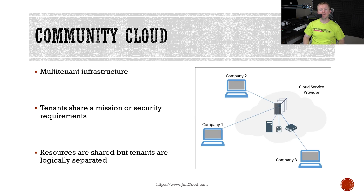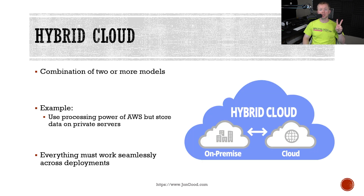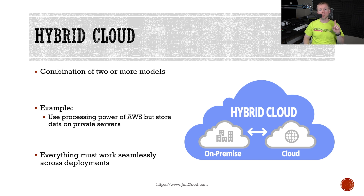Community clouds are multi-tenant infrastructure; however, the tenants or members share a mission or similar security requirements. For example, you might have a healthcare cloud where several different healthcare providers connect with the same security requirements, but they can't actually access each other's data. Hybrid clouds are a combination of at least two other models. A good example would be utilizing the processing power of Amazon AWS while storing the data in our own private cloud. The idea is that everything works seamlessly as one system, even though we aren't using a single deployment model.